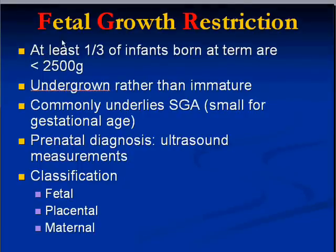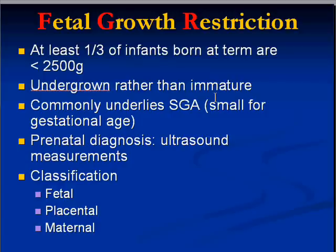An infant who has fetal growth restriction is one born under 2,500 grams — that's how you make the diagnosis. You put the baby on the scale; if it's less than 2,500 grams, you have a diagnosis of fetal growth restriction. These babies are not immature, they're just undergrown — their state of maturity is there, they're just small size-wise. This is related to small for gestational age as well. There are basically three reasons for fetal growth restriction: it's going to be the baby's fault, the placenta's fault, or the mother's fault.